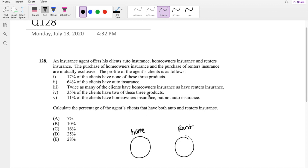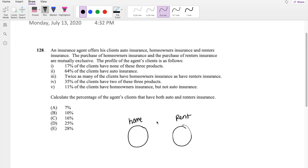And that makes sense too because if you have homeowner's, you're not going to get a renter's. Okay, and then 17% of the clients have none of these three products. So outside is 17.